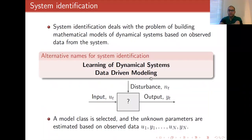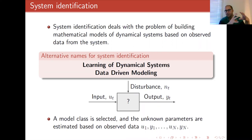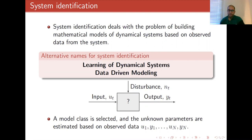As is well known, system identification is the science of constructing mathematical models for a dynamical system based on observed data. People these days call it learning of dynamical systems or data-driven modeling, but its classical name is system identification. Generally we have an unknown data generating system with input, output, and unmeasured inputs (noise terms or disturbances), and we want to find a mathematical model. The main procedure is to first select a model class — for example, a regression model or state-space representation — then find the unknown parameters from observed data.